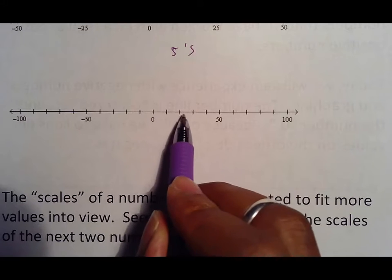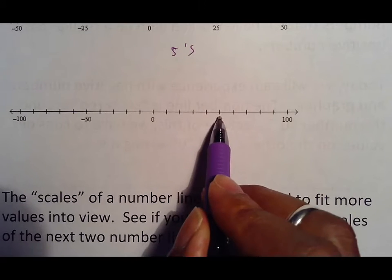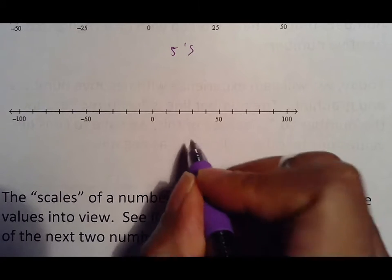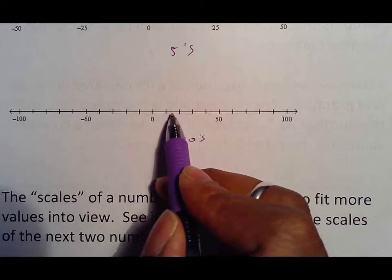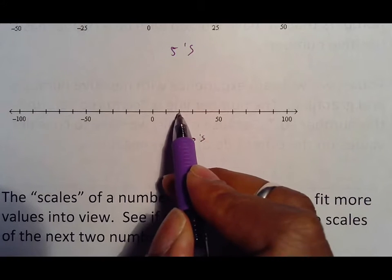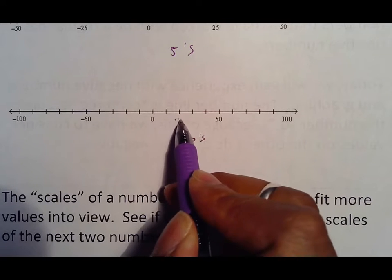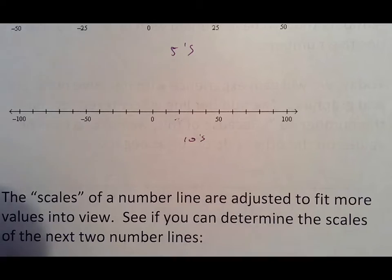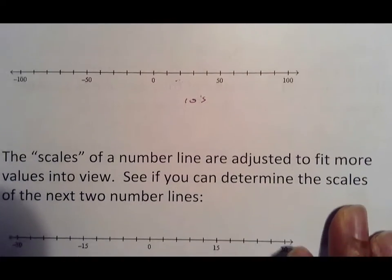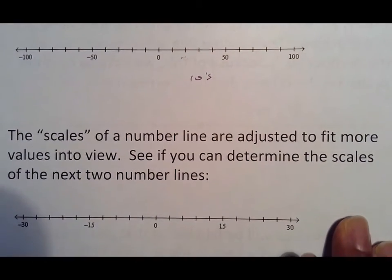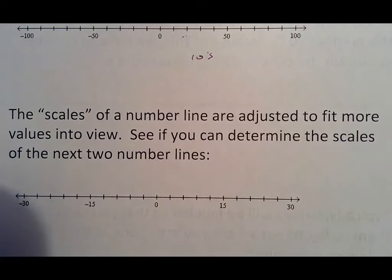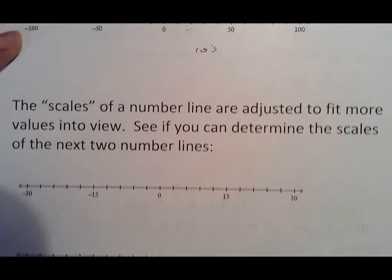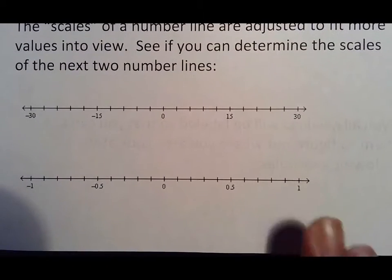Ten, twenty, thirty, forty, fifty, sixty, seventy, eighty, ninety, one hundred. So if you were counting on this number line, this value would represent twenty right there. That's why you want to be able to figure out the counting interval — that is called the scale. The scales on a number line are used to fit more values into the view. See if you can determine the scales on the next two number lines.